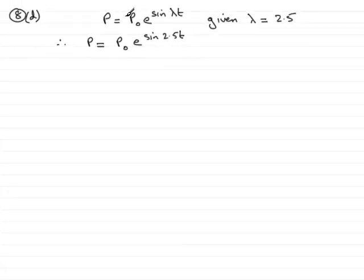Now in Part D, we already know that p equals p₀ e to the sine lambda t from this improved model. We're now given that lambda is 2.5, so substituting that into this equation gives us p equals p₀ e to the sine 2.5t.